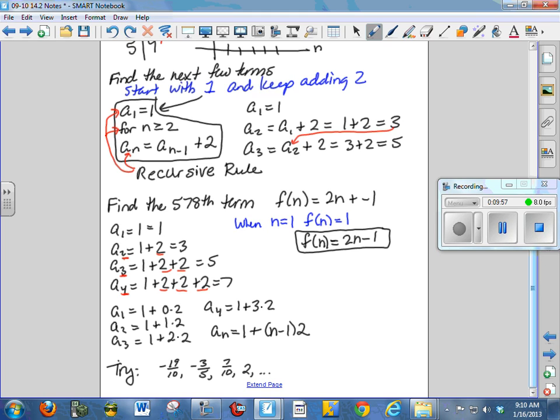So if I wanted to find the 578th term, I would just have to add 2, 577 times. So a sub 578 is equal to 1 plus 577 times 2. So this is n, this is n minus 1. And that turns out to be, for your information, 1,155.